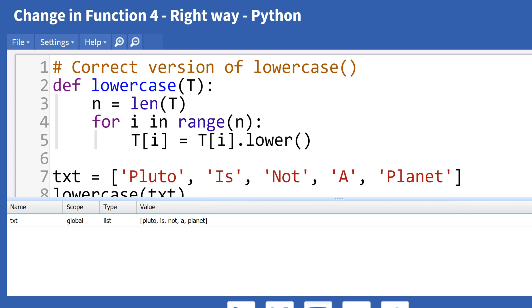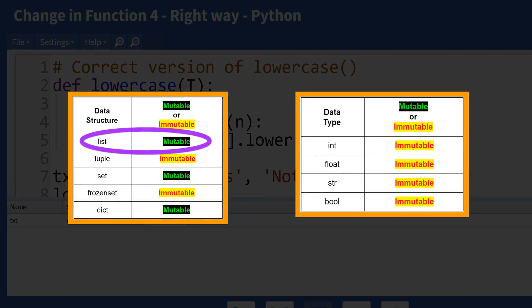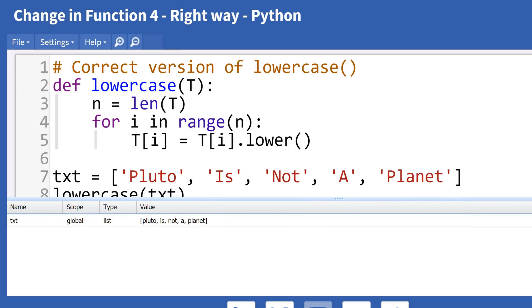To summarize, functions or methods that perform a change only work with mutable objects, such as lists. They cannot change immutable objects, such as integers, floats, strings, booleans, or tuples. I look forward to working with you in our next video.